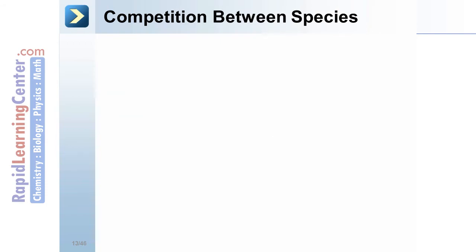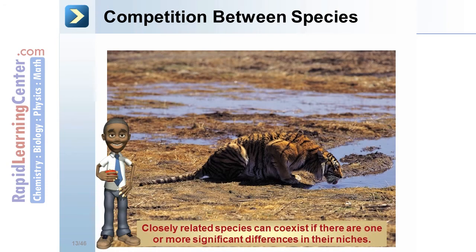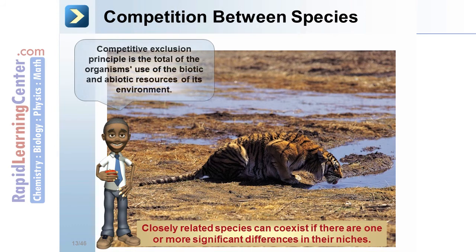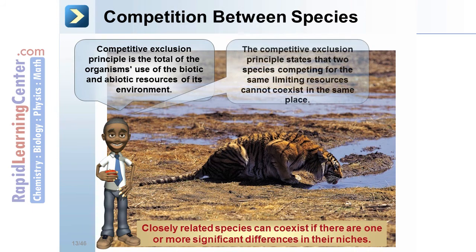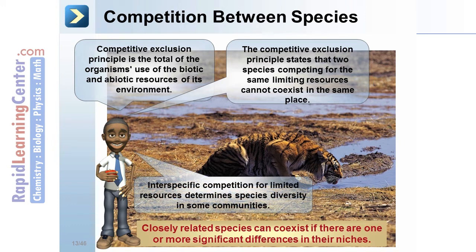Closely related species can co-exist if there are one or more significant differences in their niches. The competitive exclusion principle states that two species competing for the same limiting resource cannot co-exist in the same place. Interspecific competition for limited resources determines species diversity in some communities.